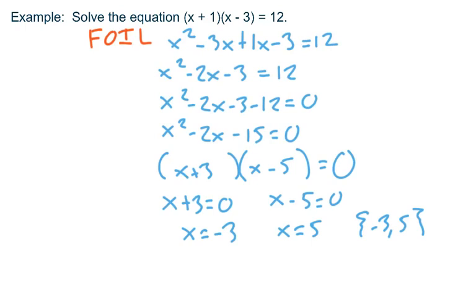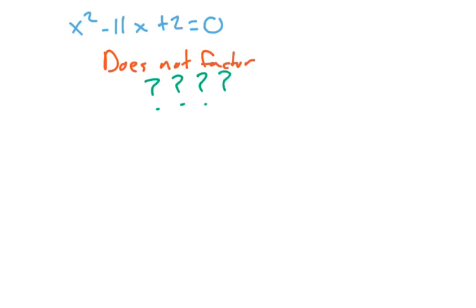Now there is one drawback to this method. Suppose I wanted to solve x squared minus 11x plus 2 equals zero. It's already got the zero on one side, but I go to factor this and it tells me I need to look for two numbers whose product is 2 but whose sum is negative 11. I have no such pair of numbers that will do that. This does not factor. The factoring method is not going to help us here, so we're going to have to discover in another video some alternative method that would allow me to solve a quadratic equation when the quadratic expression won't factor.